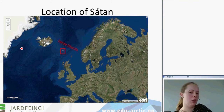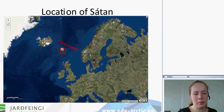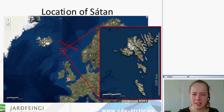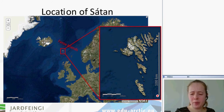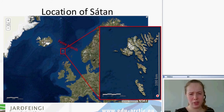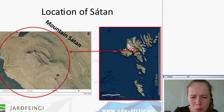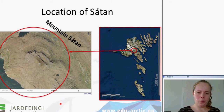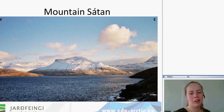The Faroe Islands are located here in the middle of the North Atlantic Ocean, between Iceland, Norway, and Scotland. There are 18 islands. The mountain Svartan that I want to discuss is located in the central part of the island group, and here we see an aerial photo of the mountain.